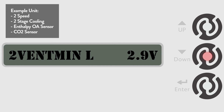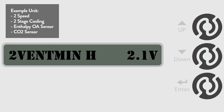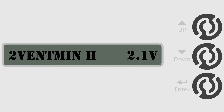Our objective is setting up a 2-speed unit with 2-stage cooling using an enthalpy outside air sensor and a CO2 sensor. Lastly, go to the 2 Vent Min H menu to set the CO2 sensor's minimum non-free cooling position when the fan is in high speed. The default is 2.3 volts, but we are going to change that to 2.1 volts. Our objective of setting up a 2-speed unit with 2-stage cooling using an enthalpy outside air sensor and a CO2 sensor is now complete.